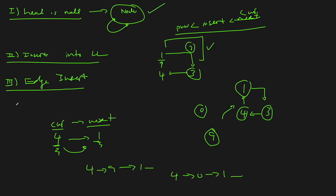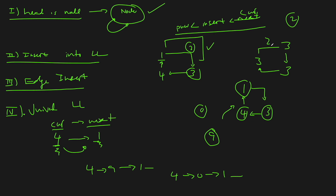There's also a fourth case: the entire circular linked list has the same value — a univalue list. If we have three, three, three and we want to insert two, it doesn't matter where we insert it — we'll still maintain sorted order. So for the univalue case, we can insert the element anywhere we want, and that's fine.